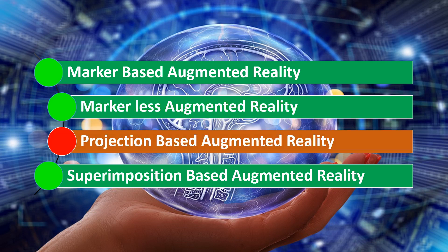Projection-based augmented reality is based on projection of light on the objects present in the real world. Through this projection, interaction of humans with the real world objects is detected. For example, by touching a statue in an old monument, projection-based augmented reality can show you how it looked when it was originally made.